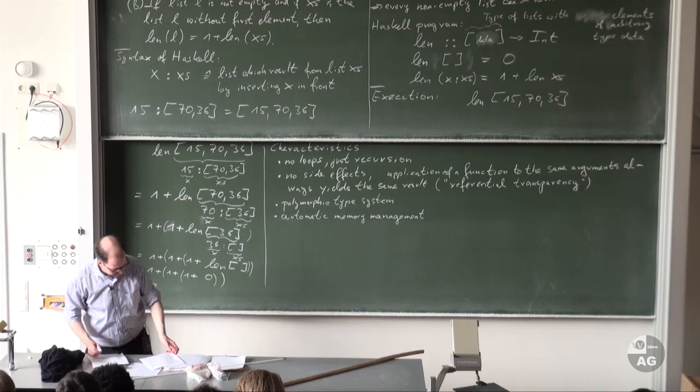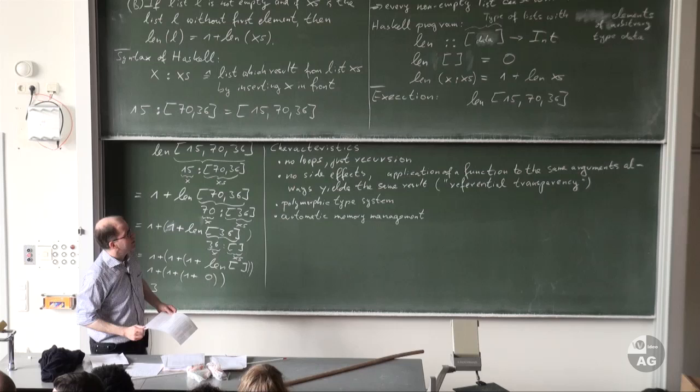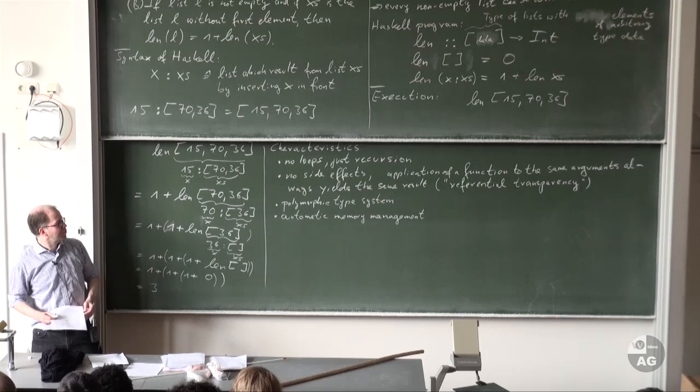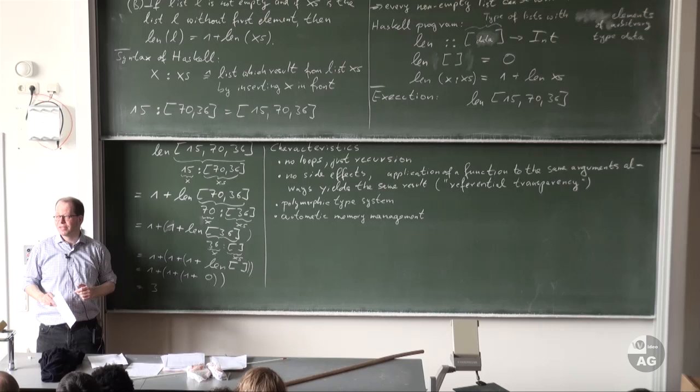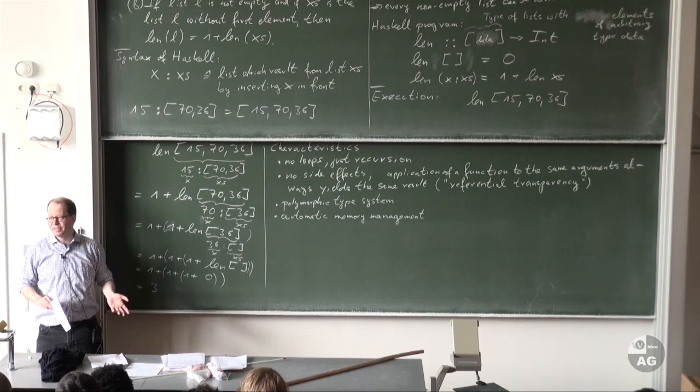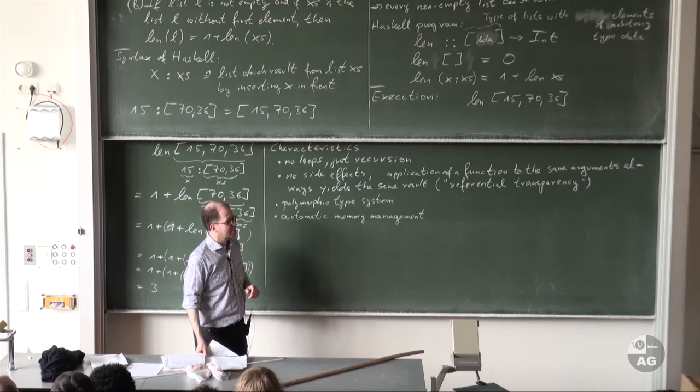Regarding the type variable name 'data' used in len: a student pointed out this might be a Haskell keyword. You can name it as you like — very often it's just called 'a'. It was called 'data' only to match the Java program. Actually, 'data' may indeed be a Haskell keyword in certain contexts, so let's rename it to 'd' to be safe.